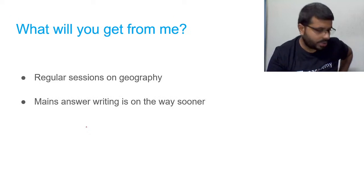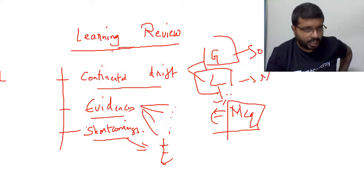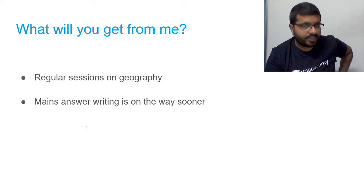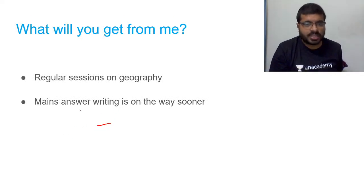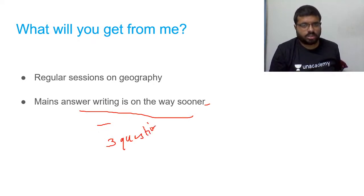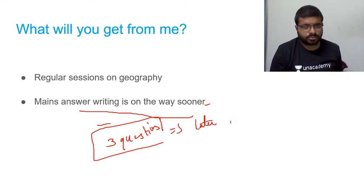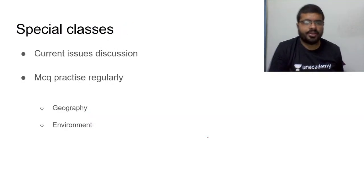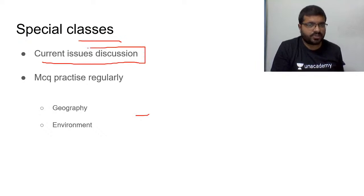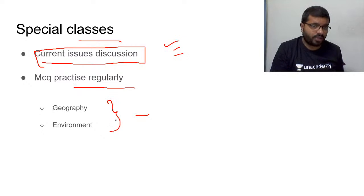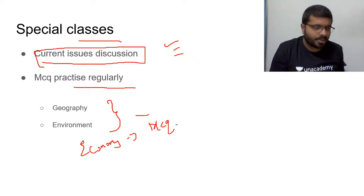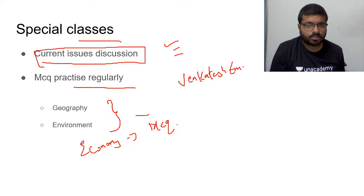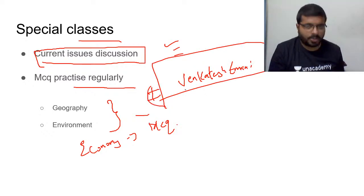Regularly, you will have sessions on geography. Main answer writing is coming — tomorrow I will give you around three to four questions to discuss, and we will review those answers next week. Special classes covering current issues will be held regularly, along with MCQ practice on geography and environment. This weekend, economy MCQs are starting. You can check the schedule on the AN Academy app or website under my profile — Venkatesh Imani.